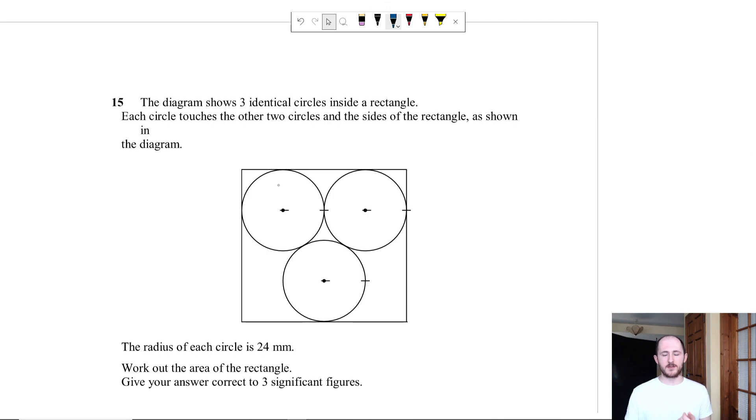And I thought this was a really interesting question and it's kind of similar to the question we did before which is the solving the impossible maths question that I have on the channel. So we have this diagram showing three identical circles inside a rectangle. Each circle touches the other two circles and the sides of the rectangle. The radius of each circle is 24 millimeters. We need to work out the area of the rectangle giving our answer to three significant figures.